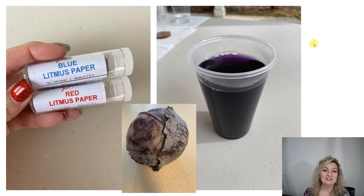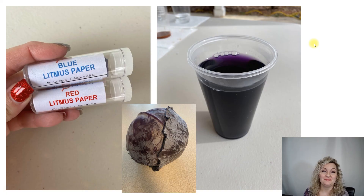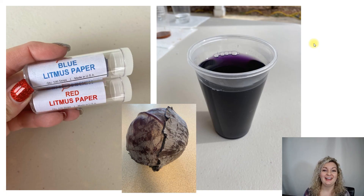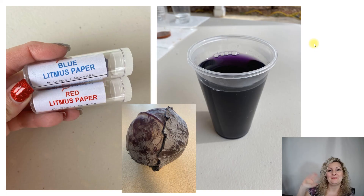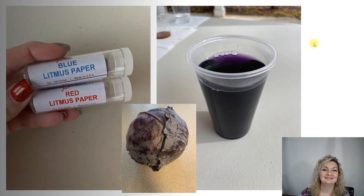I hope this lab was helpful, you guys. There are other ways to find the pH of substances, such as litmus paper or a red cabbage juice indicator. I have videos on both if you want to check them out and experience those. Thank you all so much for watching. Bye, everybody.